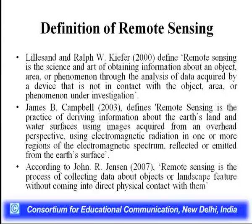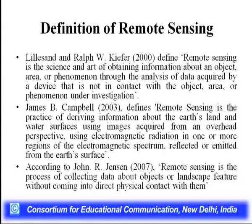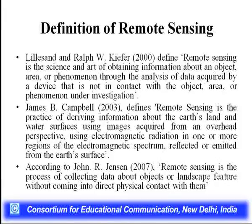Taking the definition of Lillison and Kipper: 'Remote sensing is the science and art of obtaining information about an object, area, or phenomena through the analysis of data acquired by a device that is not in contact with the object, area, or phenomena under investigation.' James B. Campbell (2003) defines remote sensing as 'the practice of deriving information about earth's land and water surface using images acquired from an overhead perspective using electromagnetic radiation.'